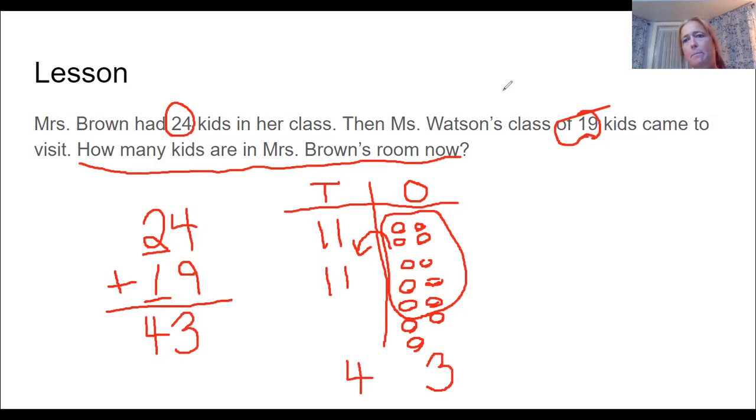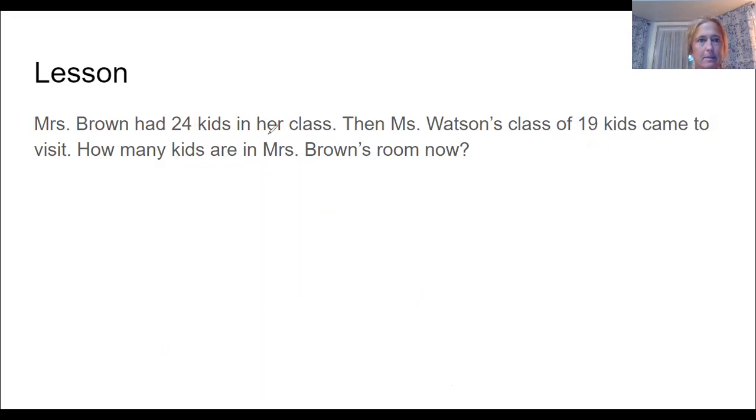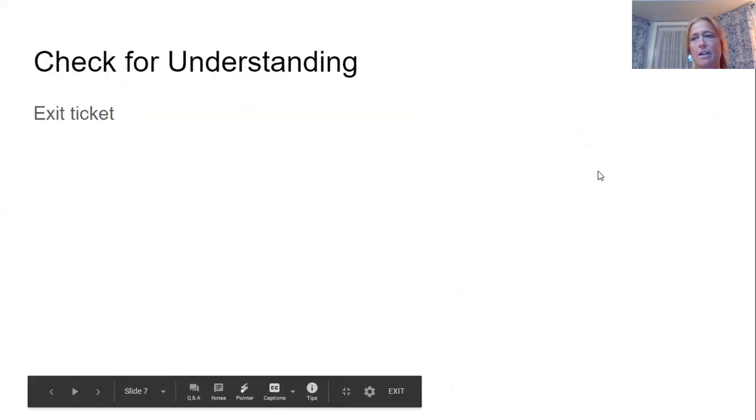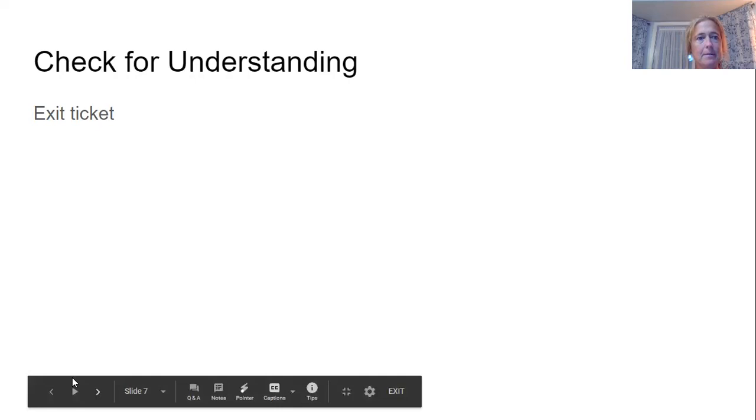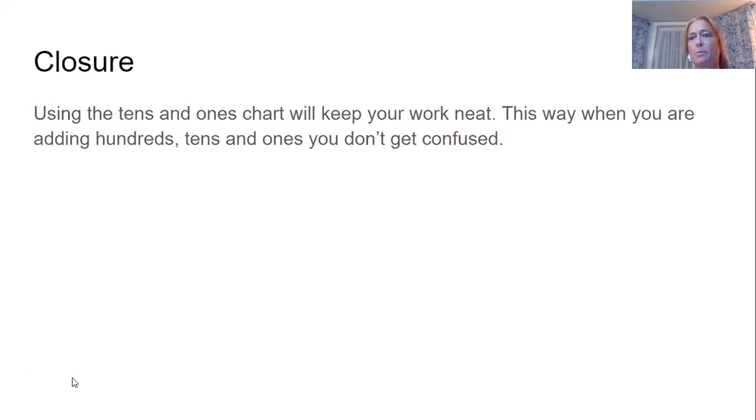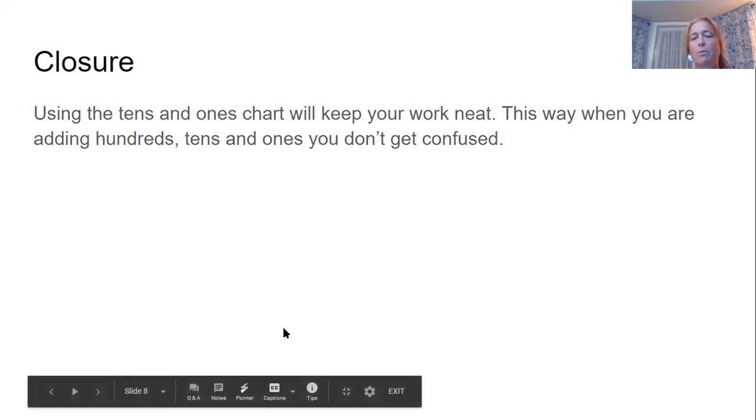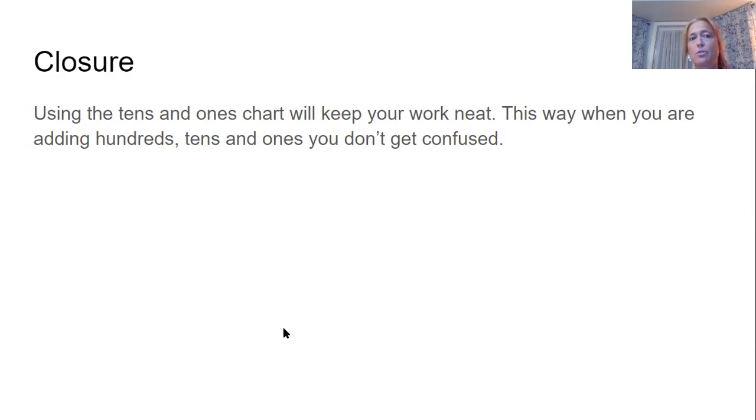All right. Now let's review. All right. You will have an exit ticket that is called word problems in Seesaw. And you will do the question, but make sure you use a tens and ones chart because that's what we are looking to make sure you understand. All right. And then using a tens and ones chart will keep your work neat. This way, when you are adding hundreds, tens and ones, you don't get confused. So this is really a way to make sure you're keeping your base 10 blocks neat. I've seen a lot of people who are drawing their tens and ones all over the board, and then it gets confusing when you're trying to count them. So using this chart will really help to keep your work neater. All right. Make sure you get that work done in Seesaw. And I will see you soon.